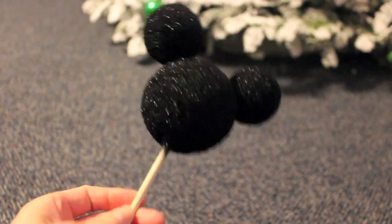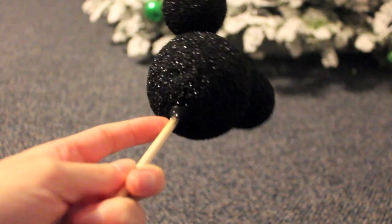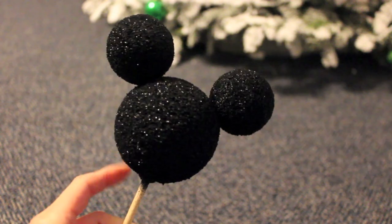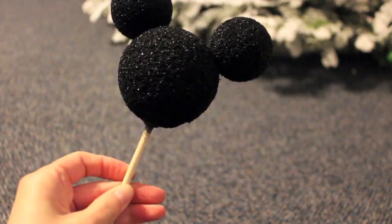I then used adhesive spray to spray the whole head so that the black glitter would adhere. At the end, I used some hairspray so that there wouldn't be any more glitter fallout.